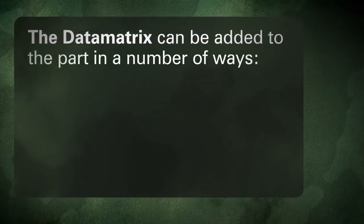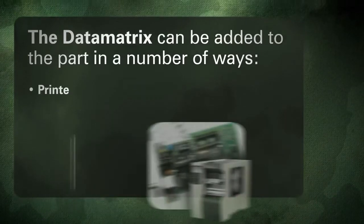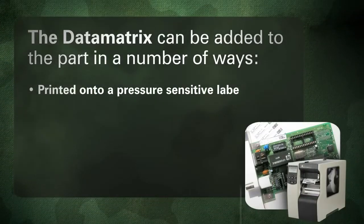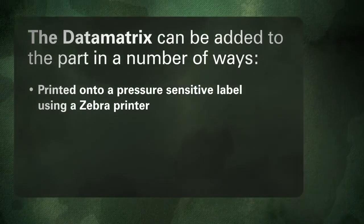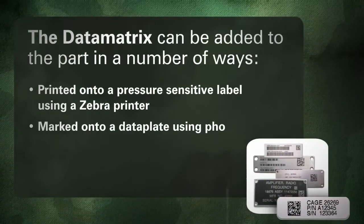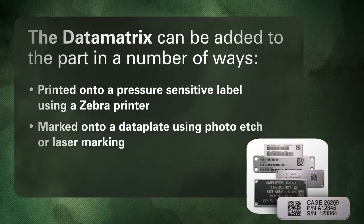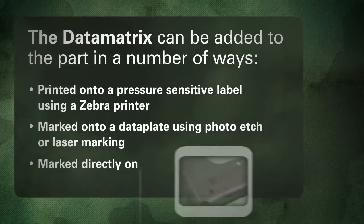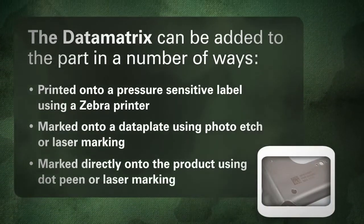The data matrix barcode can be added to the part in a number of ways: printed onto a pressure-sensitive label using a Zebra printer, marked onto a data plate using photo etch or laser marking, or marked directly onto the product using dot-peen or laser marking.